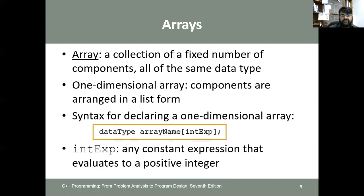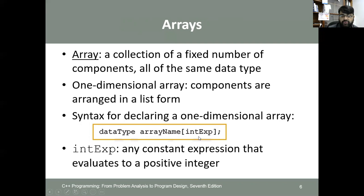A one-dimensional array has components arranged in a list form — first, second, third, fourth, fifth in a straight line — all of the same data type and fixed in number. The declaration syntax is: data type, name of the array, followed by an integer expression in brackets. This integer expression specifies the number of components to be stored, and must be a positive integer.